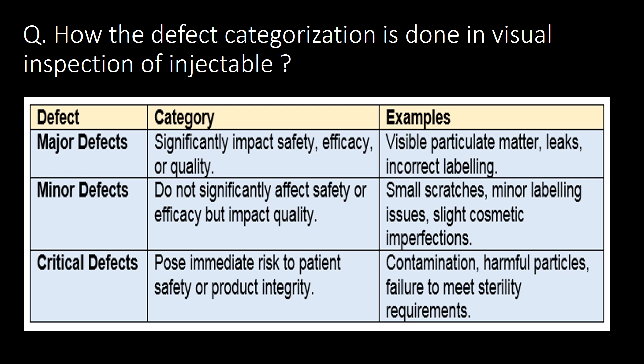Major defects significantly impact safety, efficacy, or quality. Examples are visible particulate matter, leaks, and incorrect labeling. Minor defects do not significantly affect safety or efficacy but do impact quality. Examples are small scratches, minor labeling issues, and slight cosmetic imperfections.